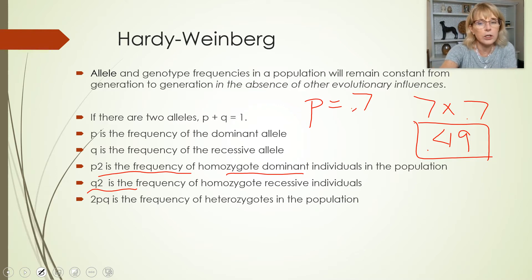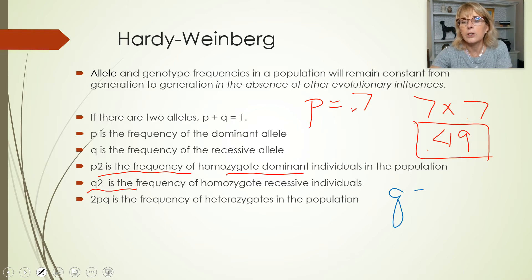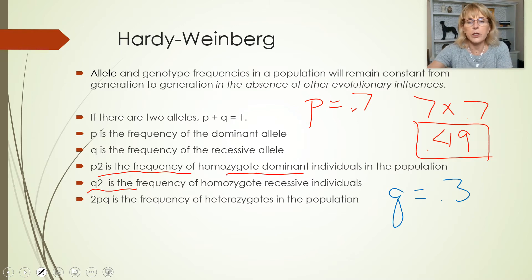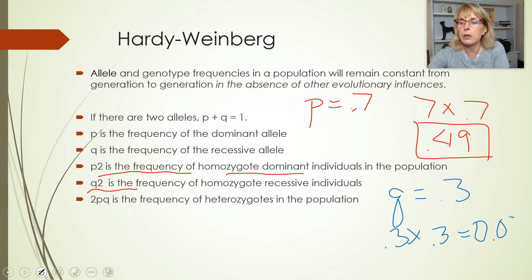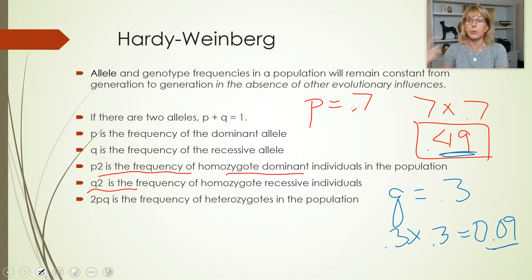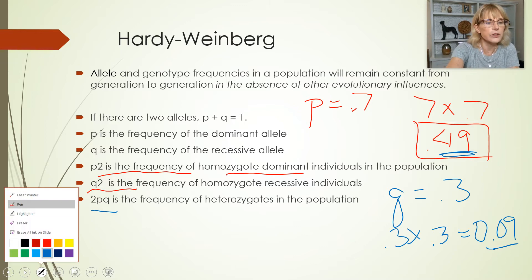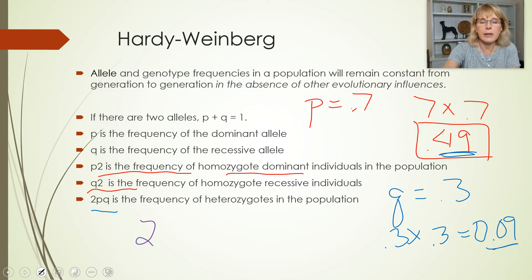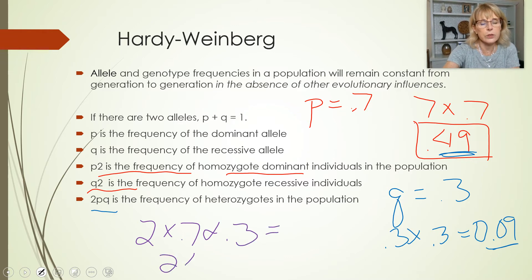q² is the frequency of homozygous recessives. If p is 0.7, then q is 0.3, because 0.3 plus 0.7 equals 1. So q² is 0.3 times 0.3, which equals 0.09. And 2pq is the frequency of heterozygotes: 2 times p (0.7) times q (0.3) equals 2 times 0.21.